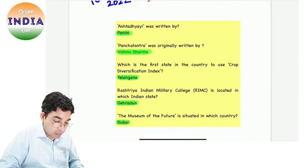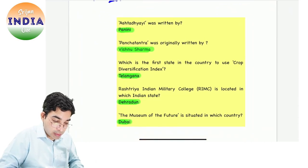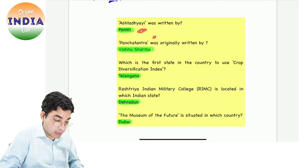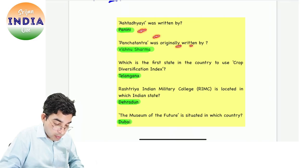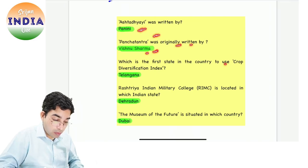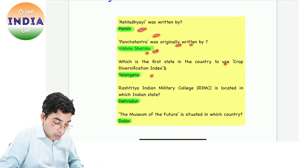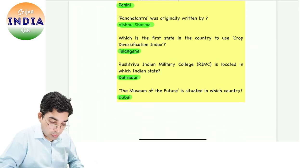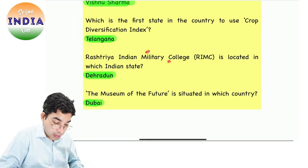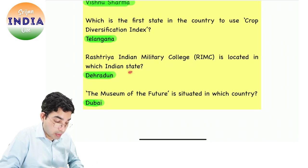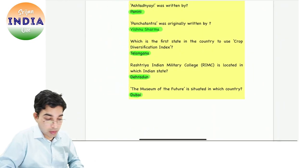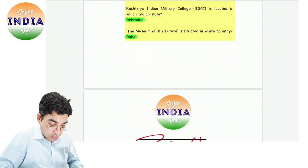18th of March RapidGK questions ke answers hain. Aashita Adhyahi was written by Panini. Pancha Tantra was originally written by Vishnu Sharma. Crop Diversification Index — Telangana is the first state where it was introduced. Rashtriya Indian Military College is located in Dehradun. Museum of the Future is situated in Dubai. So these are five questions for today.